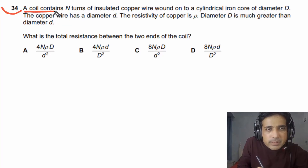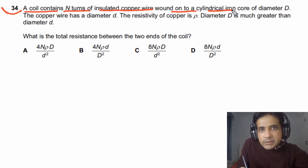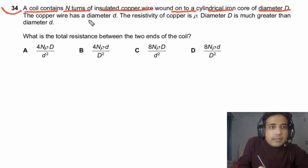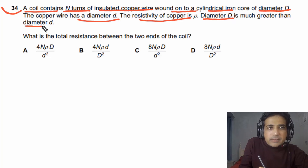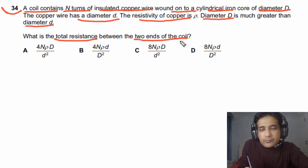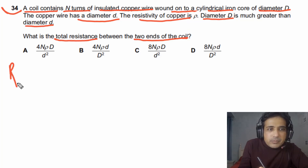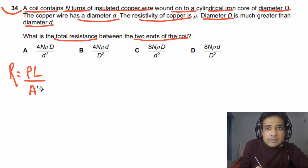For question 34, a coil contains N turns of insulated copper wire wound onto a cylindrical iron core of diameter capital D. The copper wire has diameter small d, and the resistivity of copper is rho, with capital D much greater than small d. We need to calculate the total resistance between the two ends of the coil. Resistance equals rho times L divided by A, where L is the total length of the wire and A is its cross-sectional area.